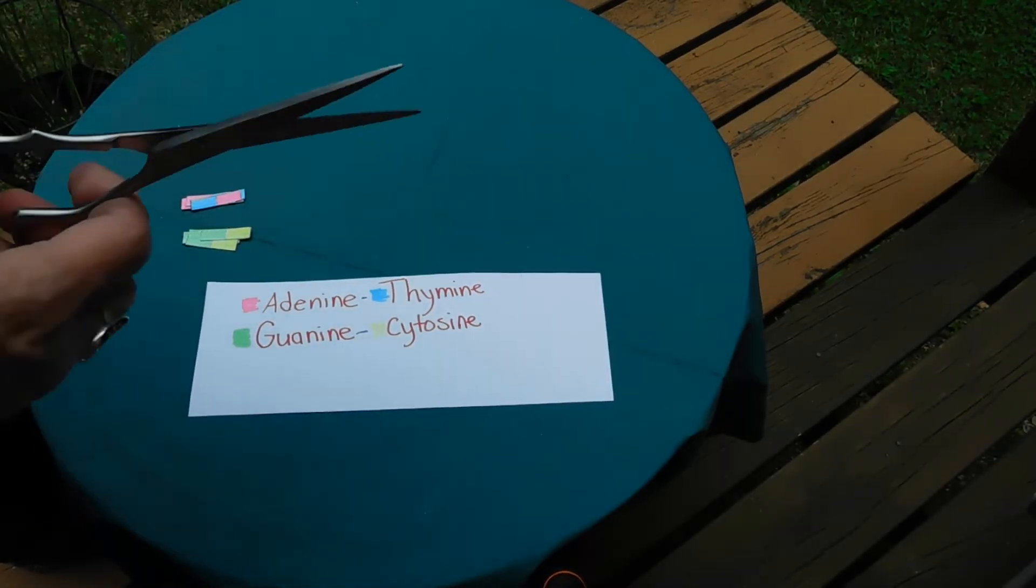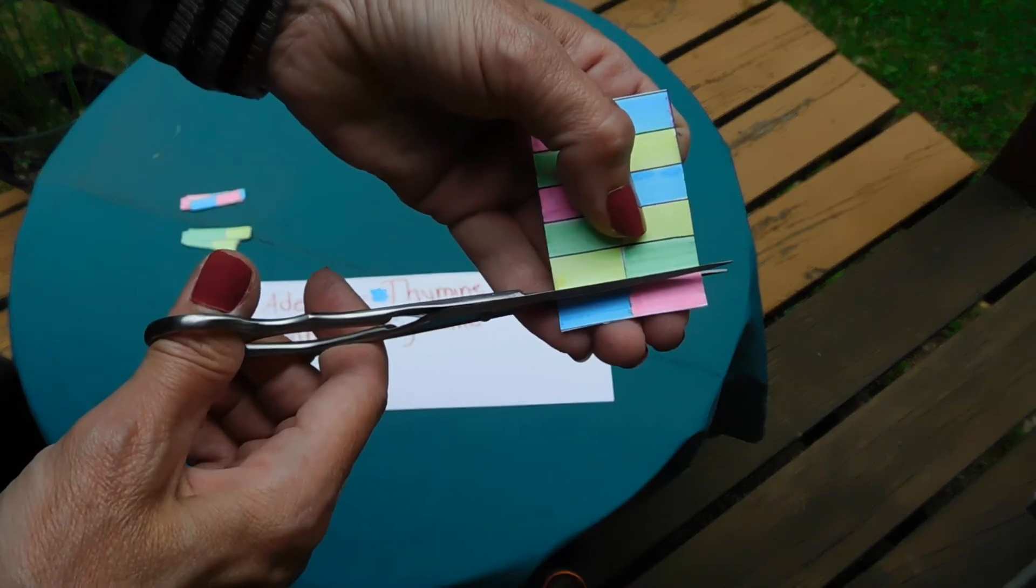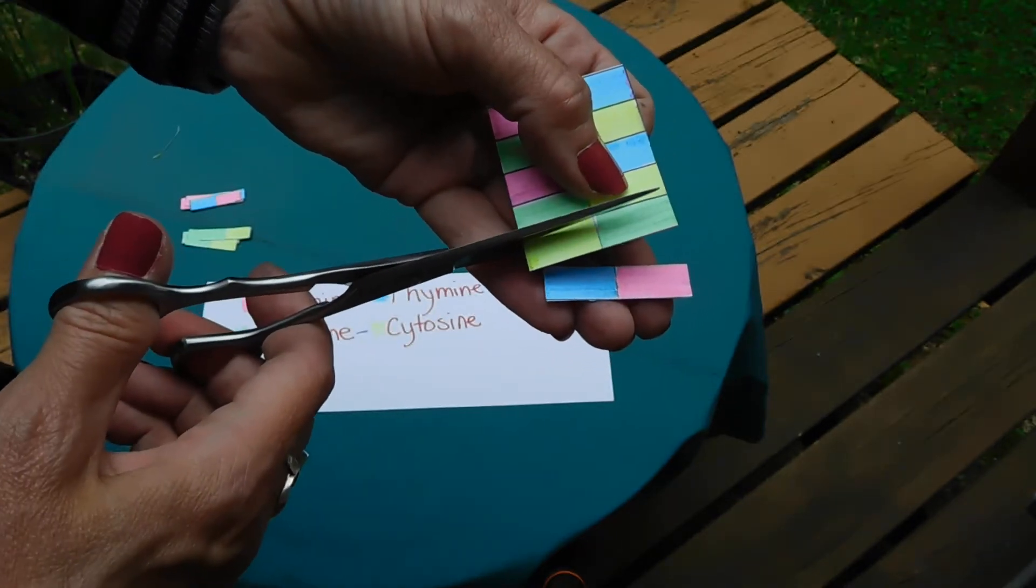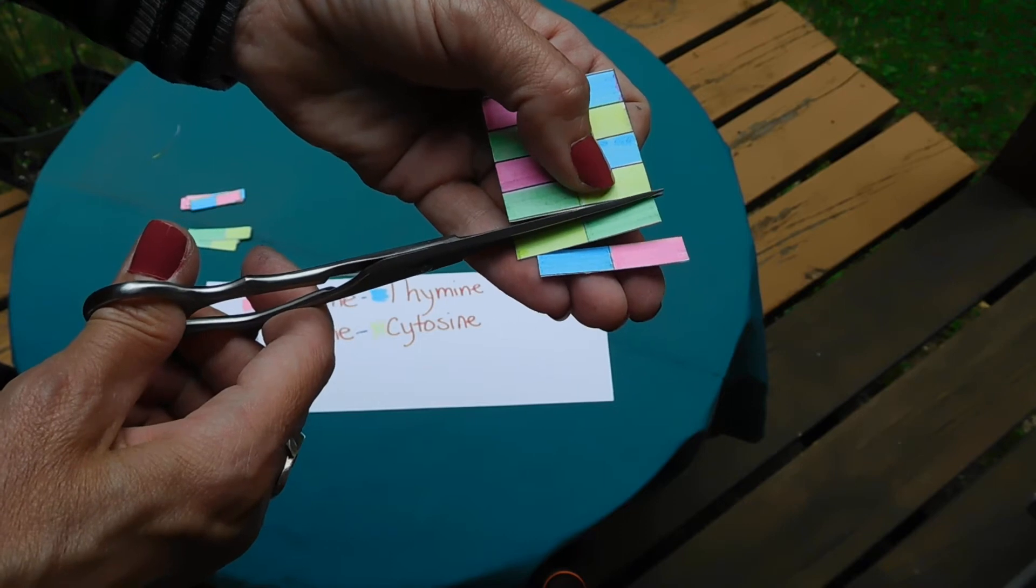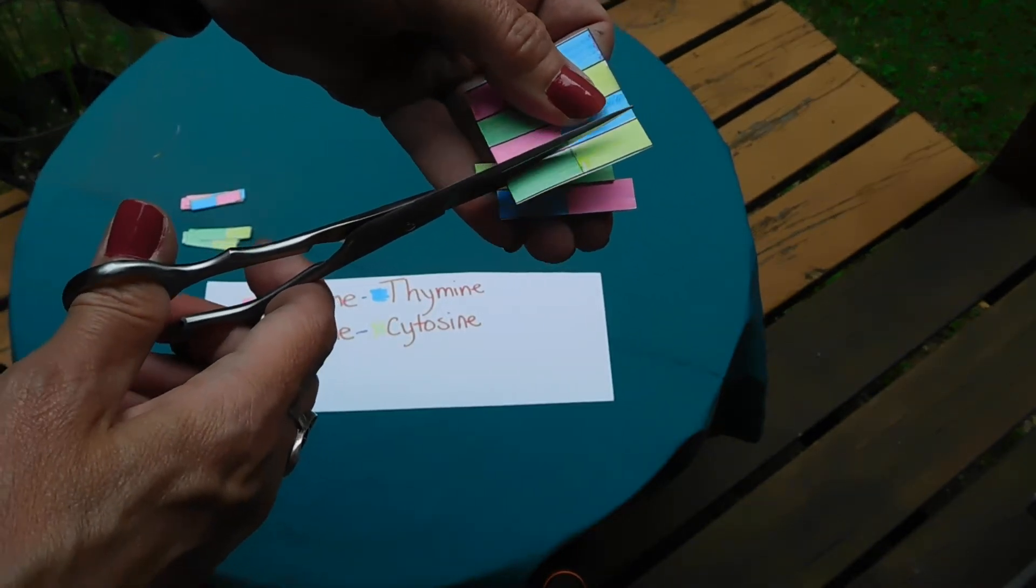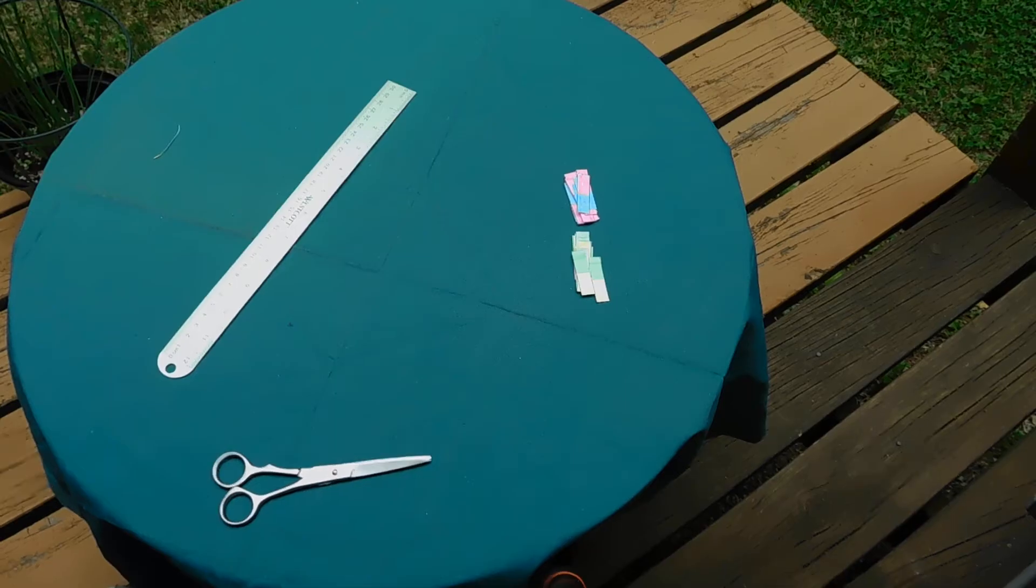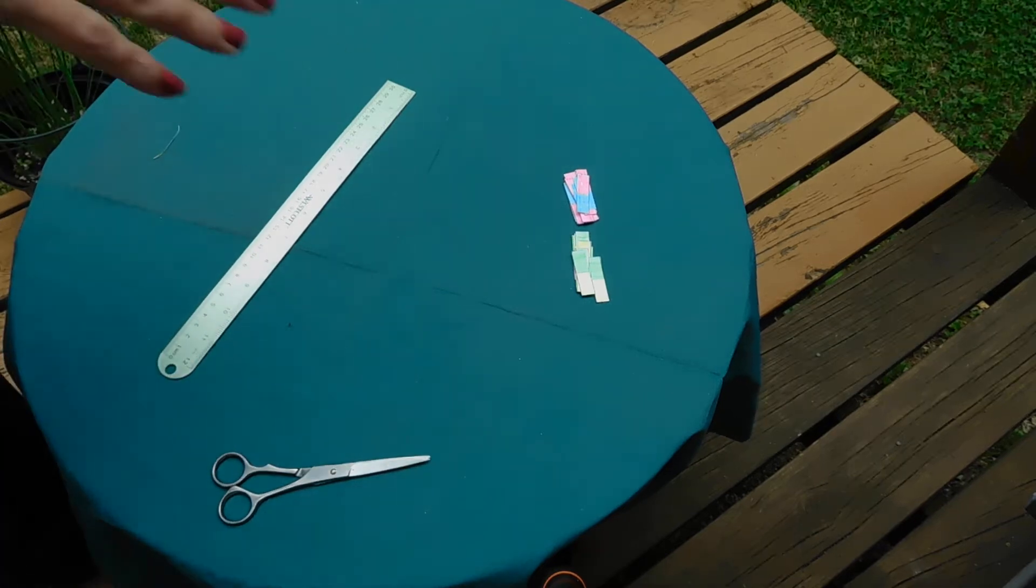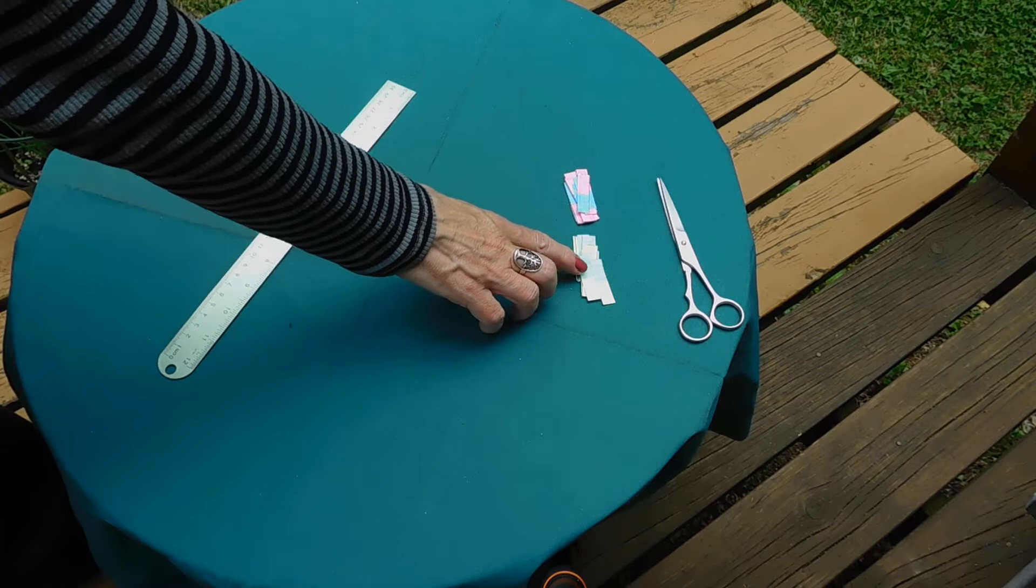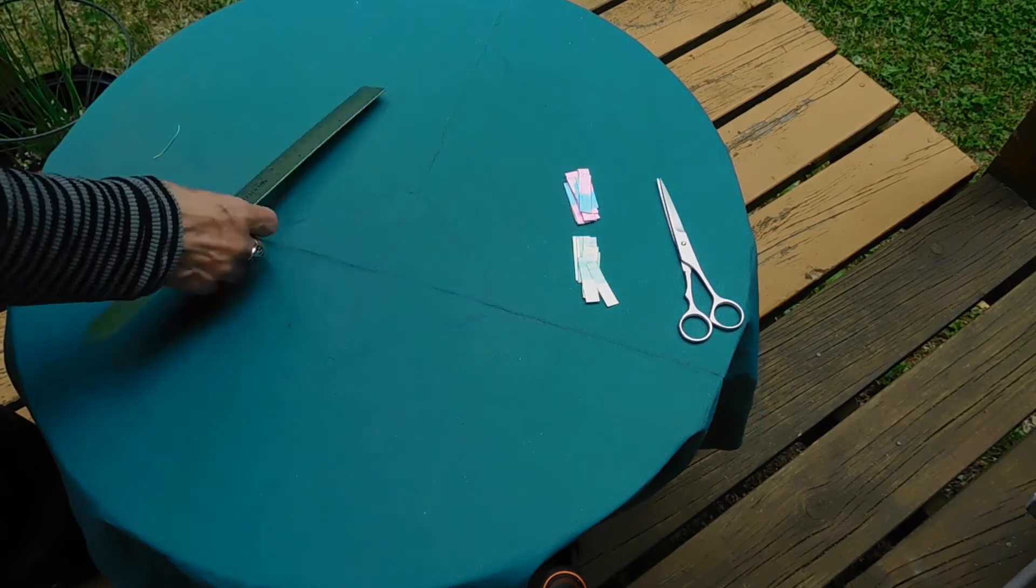so that I knew to color the matching pair to that point. Now if you wanted to, instead of leaving the 42 rectangles all together, you could cut them separate and then color them in. That is your choice completely. So after I cut them all out, I just put them into two piles. The cytosine and guanine pairs are in this pile. The adenine and thymine pairs are in this pile.